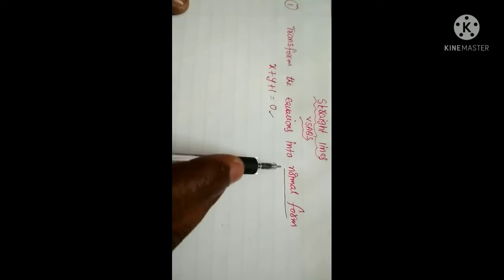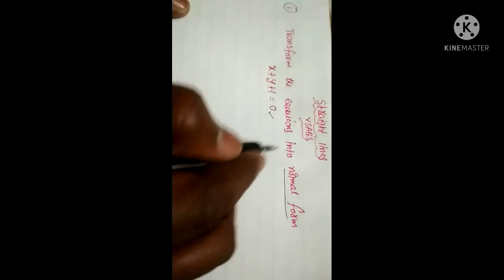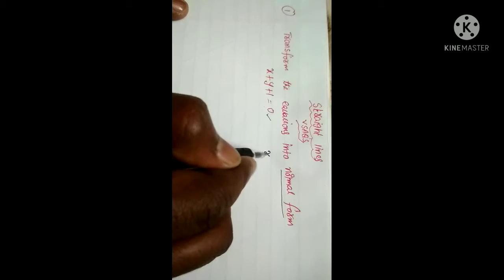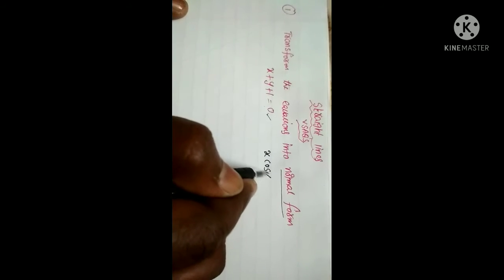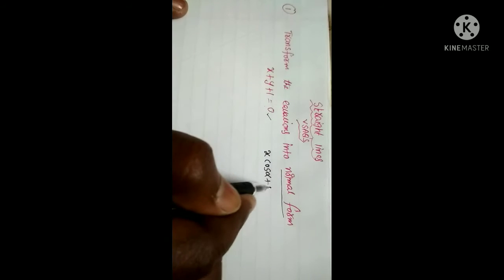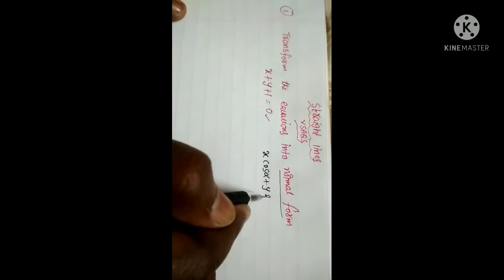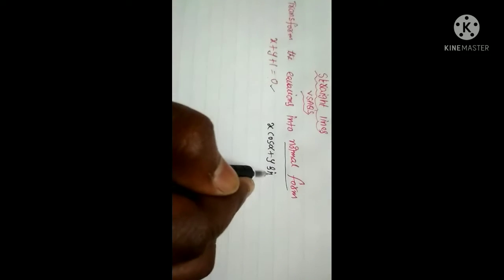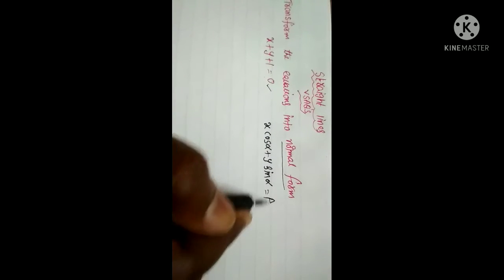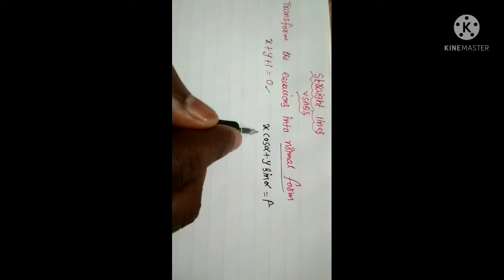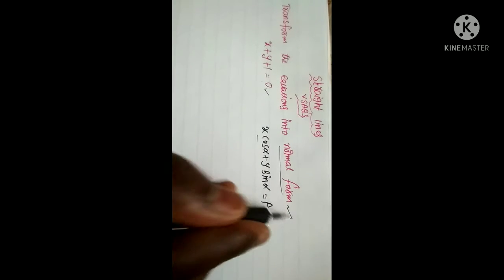First of all, what is normal form? The normal form is x cos α plus y sin α equal to p. This is the formula of normal form.